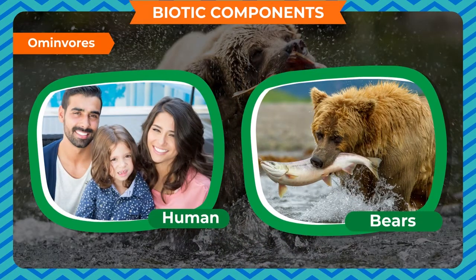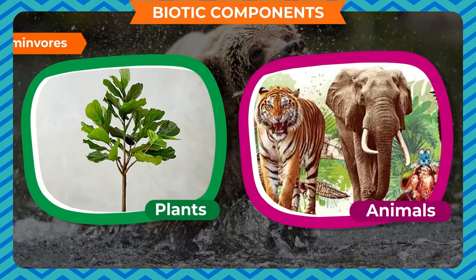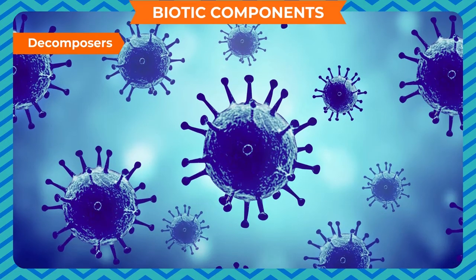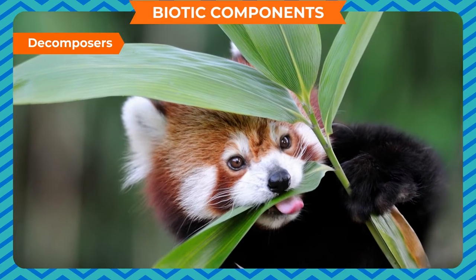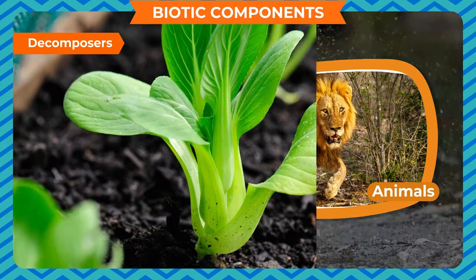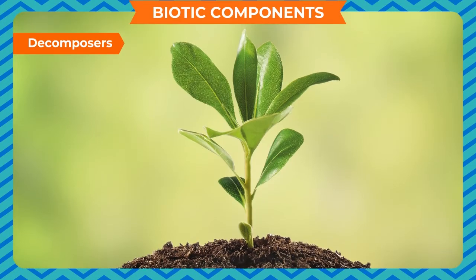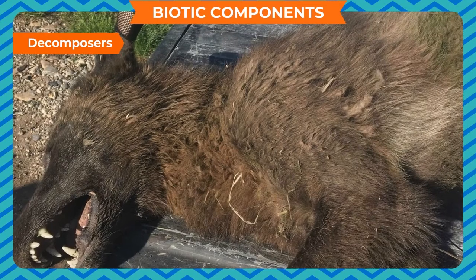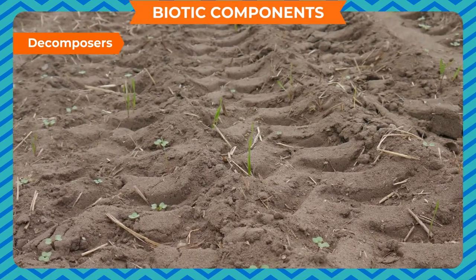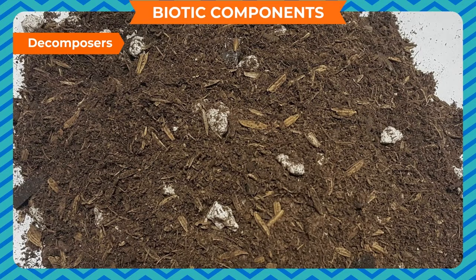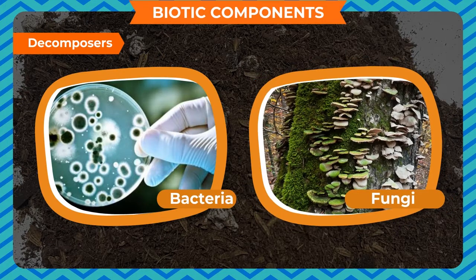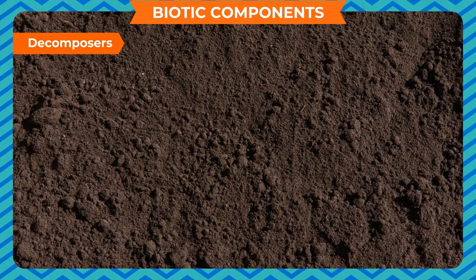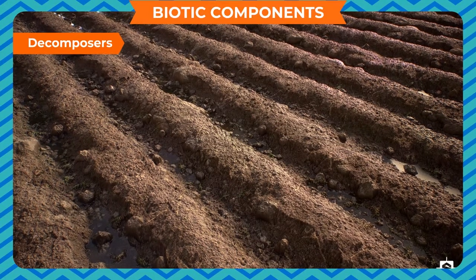Omnivores, such as humans, bears and crows, consume both plants and animals. Decomposers: Bacteria and fungi are very small microorganisms that feed on the dead remains of plants and animals. When a producer or consumer dies, bacteria or fungi break down the dead material into nutrient substances. These nutrients return to the soil, and thus bacteria and fungi maintain the balance of nutrients in the soil — nature recycles the nutrients that have been taken from the soil.